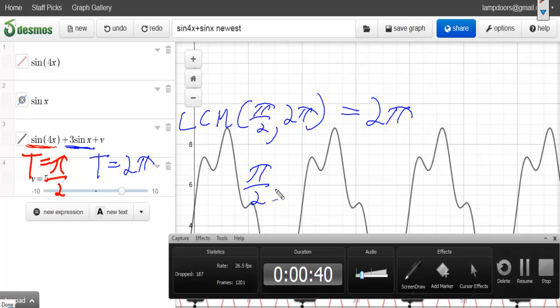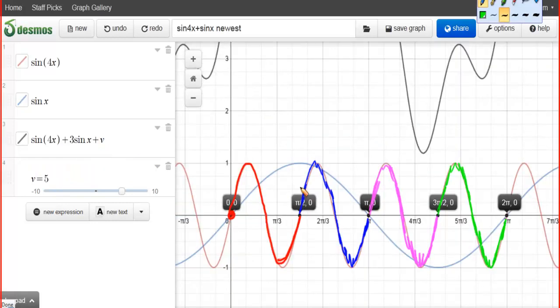In fact, there are 4 pi over 2's in every 2 pi. And if you look at the graph, you can see that that's true. That I can have 4 of those cycles that each have period pi over 2.